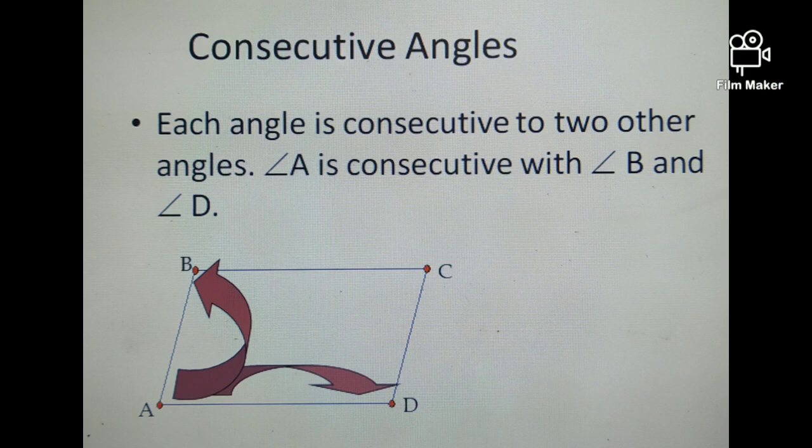This is an example of consecutive angles. Each angle is consecutive to two other angles. That means one angle has two consecutive angles. For example, angle A is consecutive with angle B. Also, angle A is consecutive with angle D.